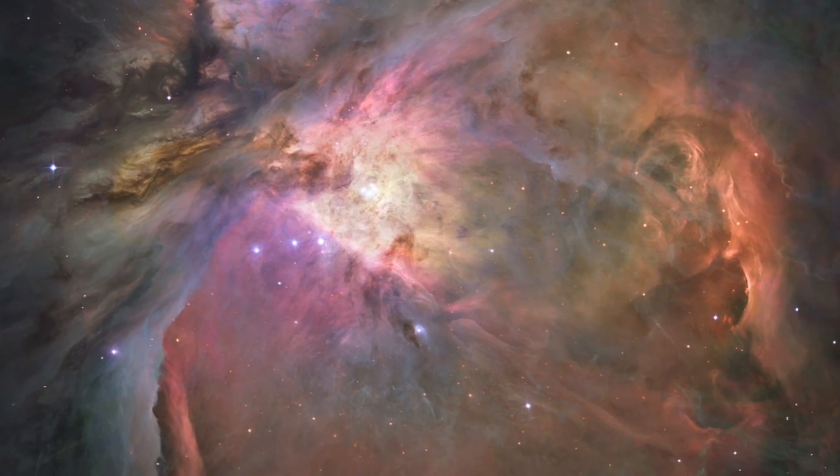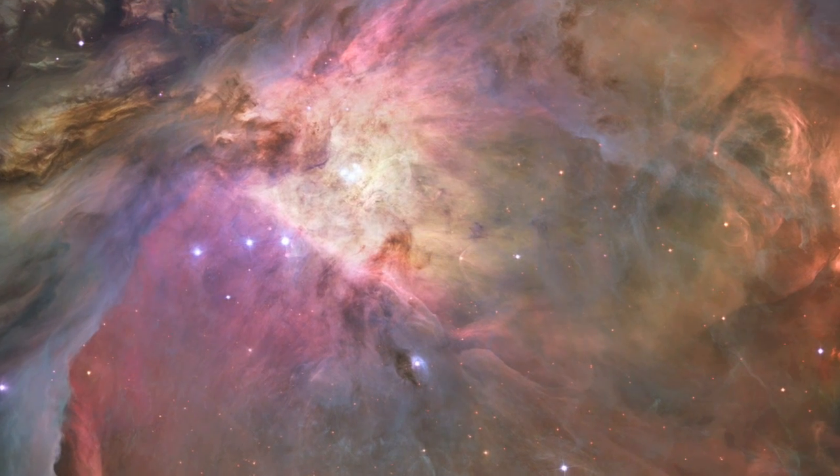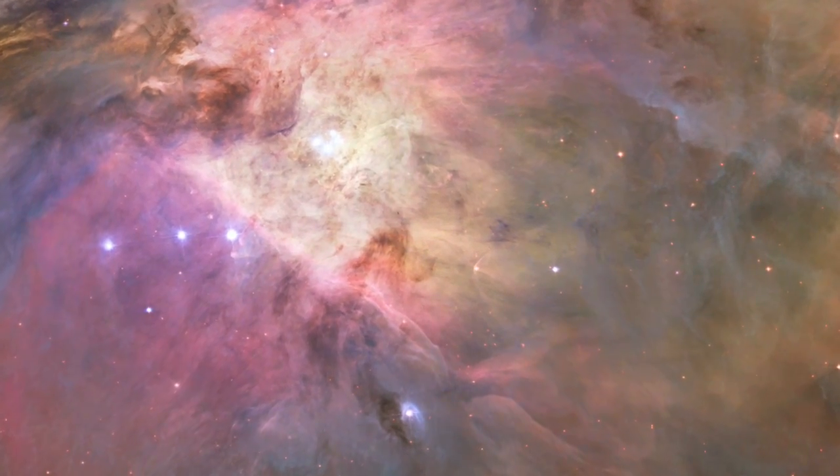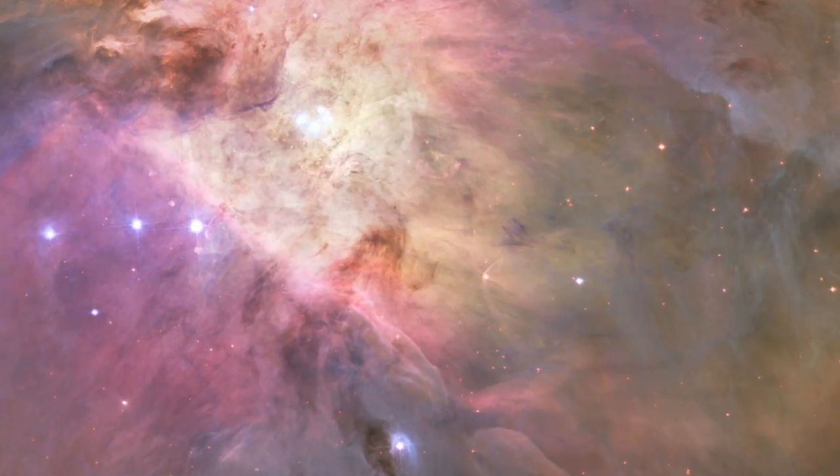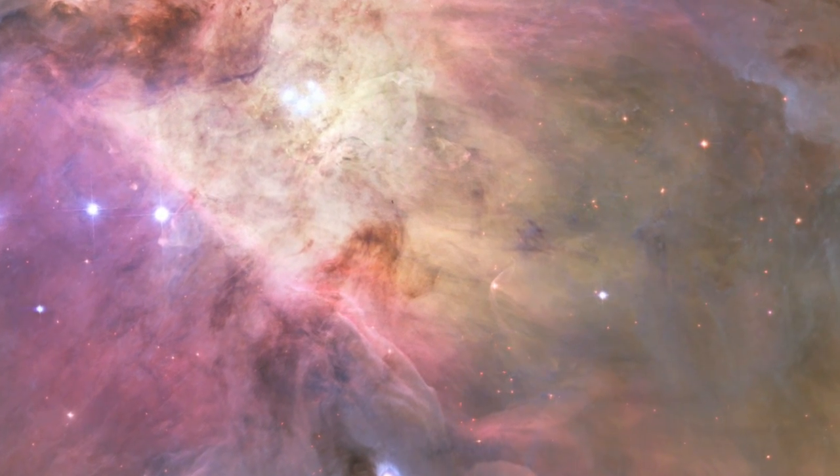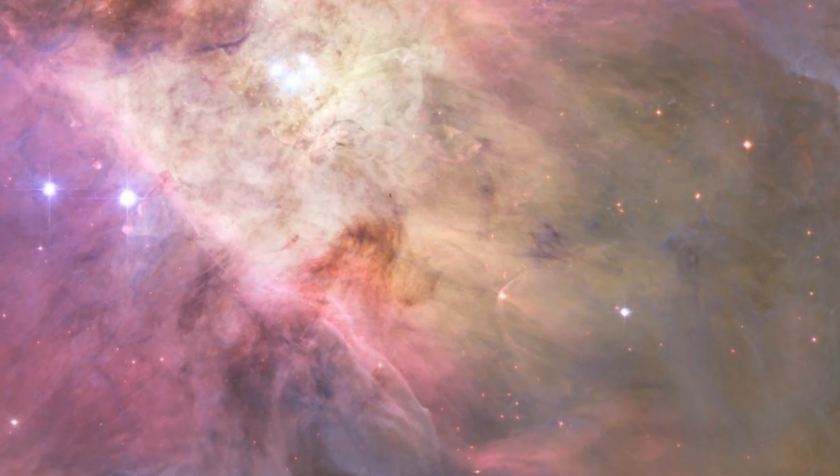Looking at the frenzied mixture of gas and swirling dust, it's pretty clear that a lot is going on inside the Orion Nebula. Within the awe-inspiring gaseous folds of Orion, researchers, using data from the Wide Field Channel on Hubble's Advanced Camera for Surveys, have identified two different types of disks.